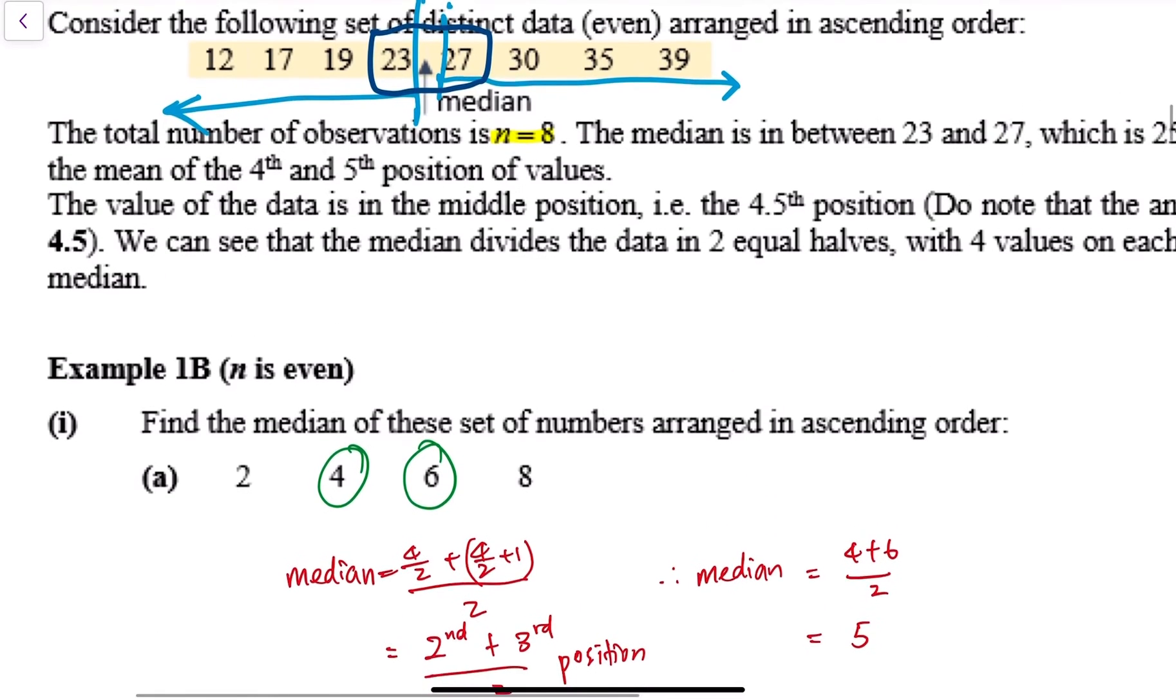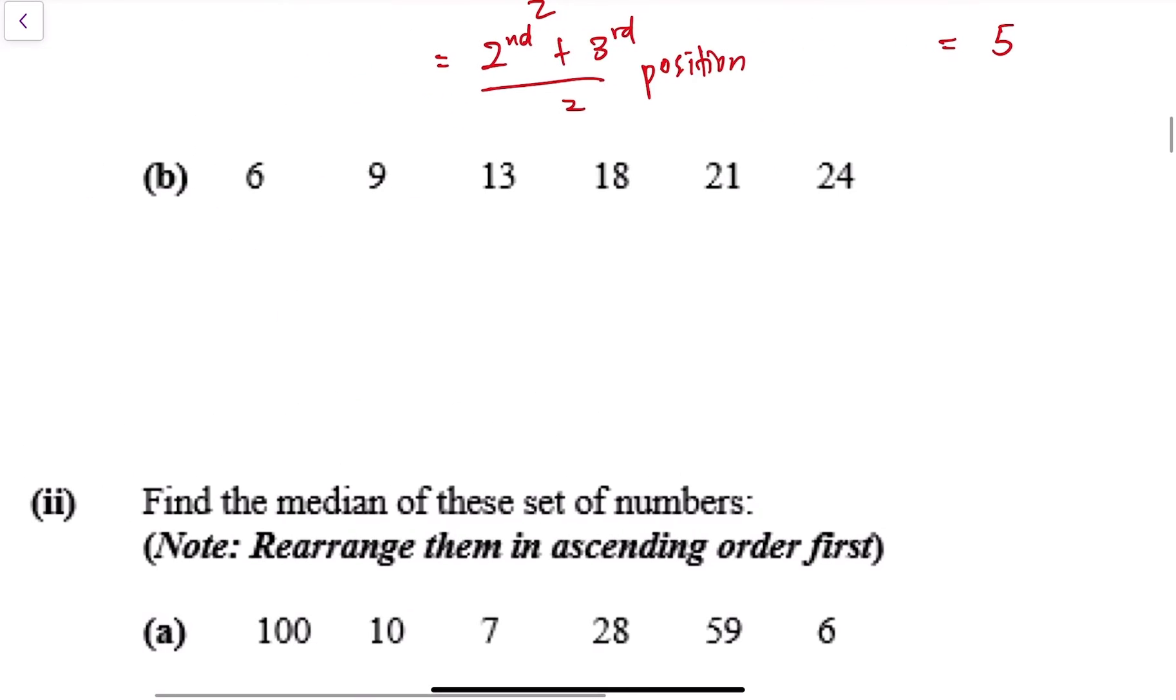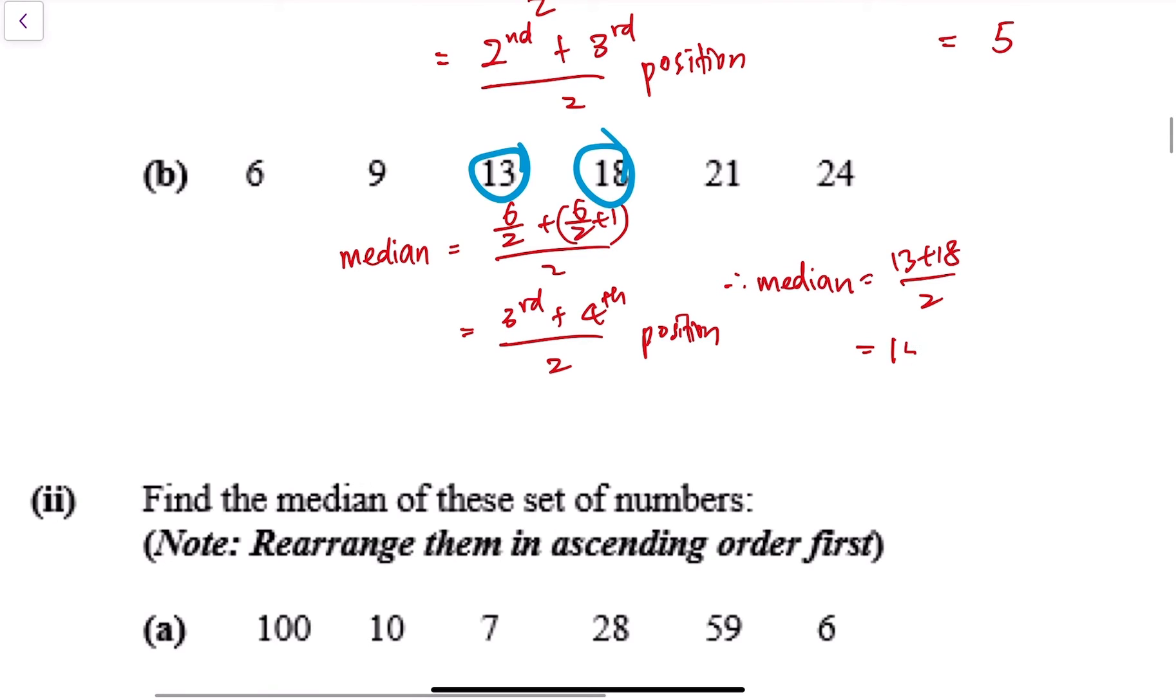I need to take the two median numbers, add together and divide it by two. So the next number. I have one, two, three, four, five, six, six data points here. So my median will be six over two plus six over two plus one divided by two. So this is my third position plus my fourth position divided by two. So it will be this plus this divided by two. So therefore, median will be equal to 13 plus 18, then divide by two. This is 15.5, right?